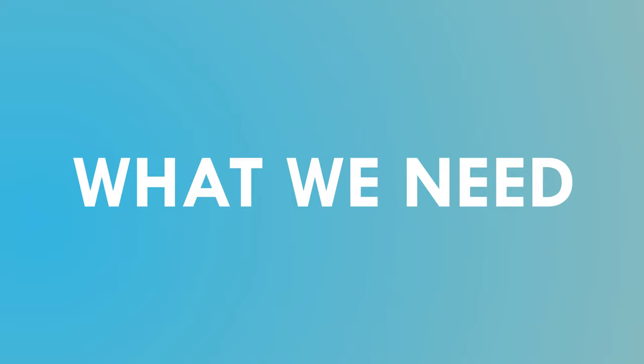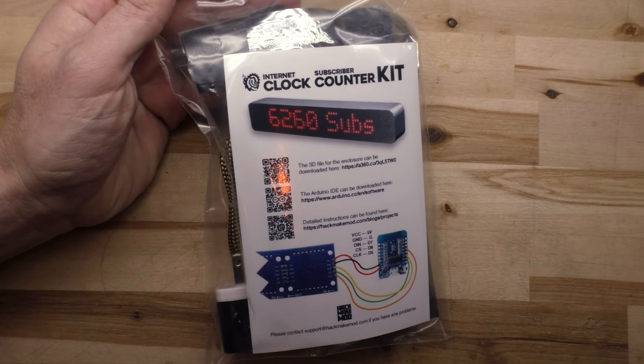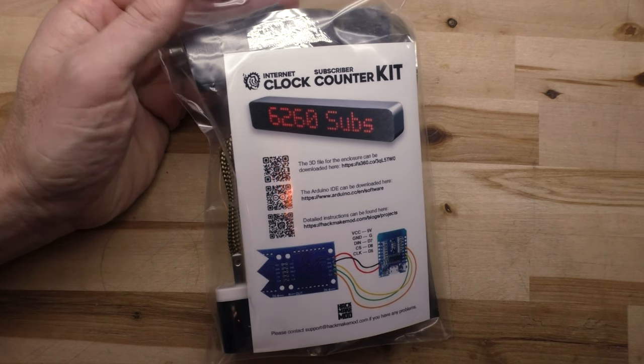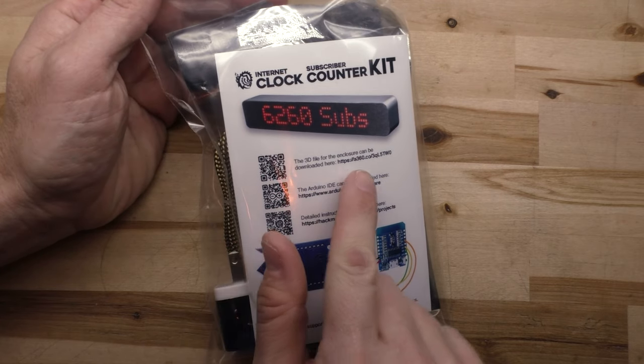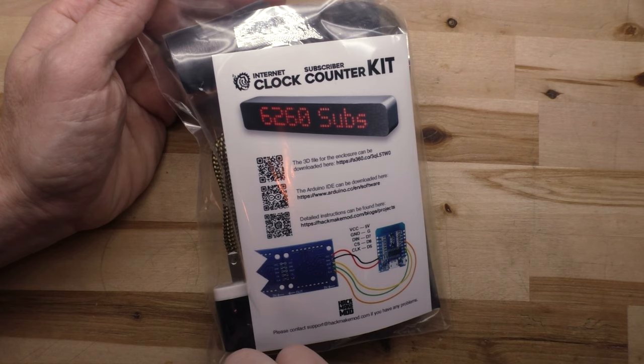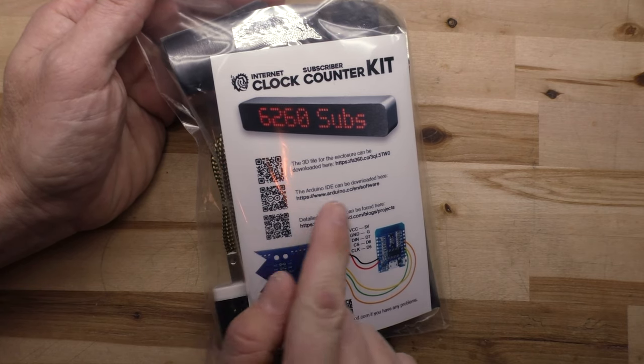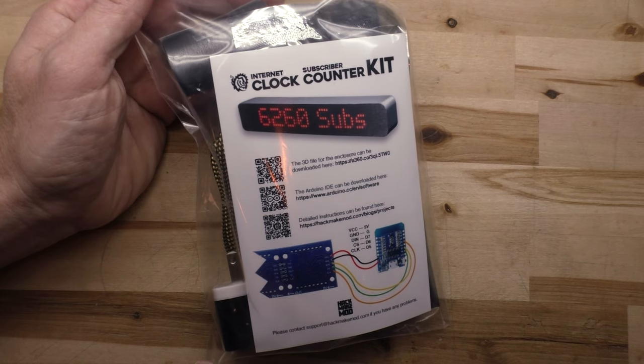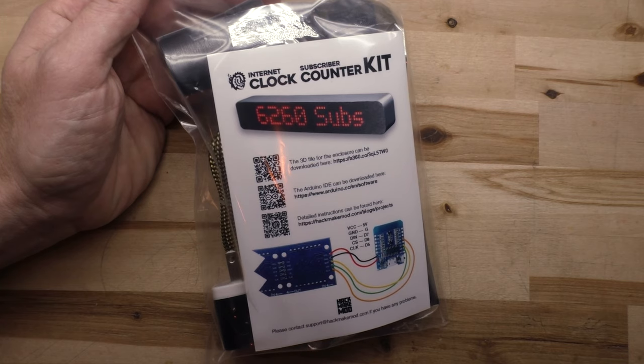Before we start on anything, let's make sure we have all the parts. If you bought this off of our store, it'll give you everything you need with the exception of the enclosure. First, you'll notice we have a little card here that has all the information. The first one is a QR code and a link for the 3D files for the enclosure. Second is the QR code and a link for the Arduino IDE, the programming software you use to flash your microcontroller.